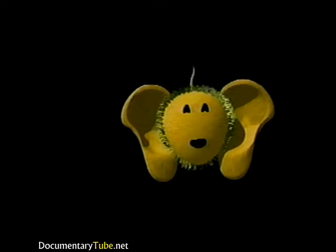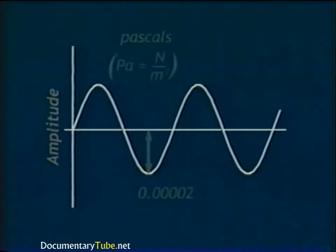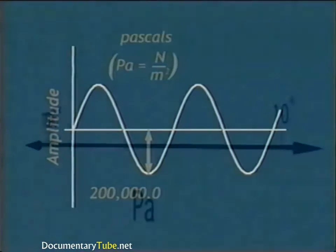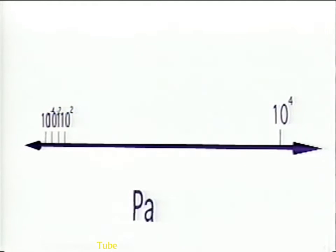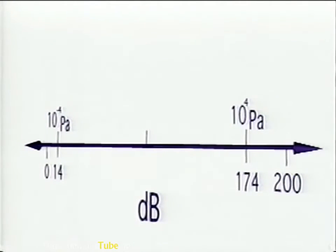A better understanding of noise involves quantifying its perception. Physical measurements of the strength of the wave are explained first, followed by perceptual measurements. The amplitude of a sound wave can be quantified by measuring the associated pressure disturbance — the change in pressure from ambient, termed the acoustic pressure. Sound can be represented in pressure units called pascals (Pa). Because acoustic pressure amplitudes range from hundred-thousandths to the hundred-thousands in pascals, it is convenient and customary to plot data on the more compact logarithmic scale, where the unit is the decibel (dB).